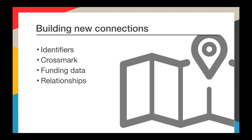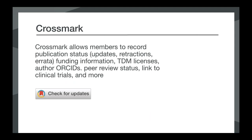We're using these new types of metadata to build new routes and bridges to scholarly objects. We're building bridges through established and new identifiers like DOIs, ORCIDs, ISSNs, and ISBNs. We're connecting funders and grants to research outputs through funding data, connecting supplemental materials and datasets to journal articles through explicitly declared relationships, and making connections through our Crossmark service, which allows members to include information about updates, retractions, and clinical trials.